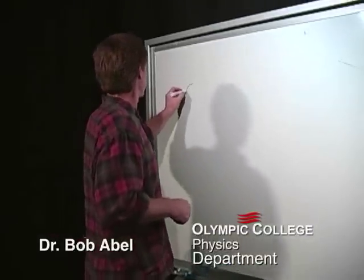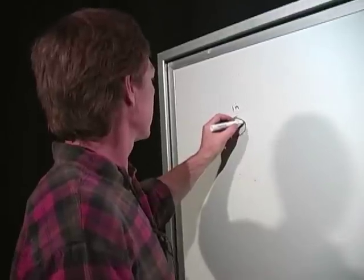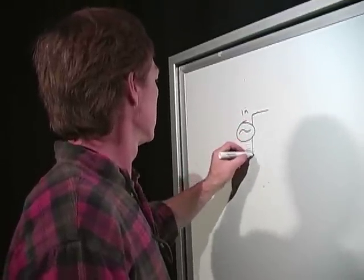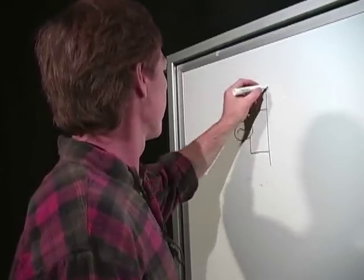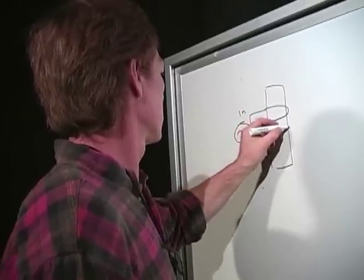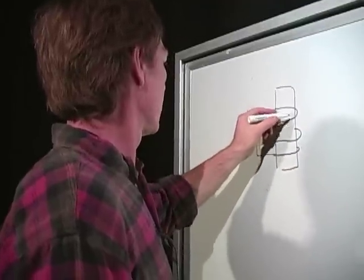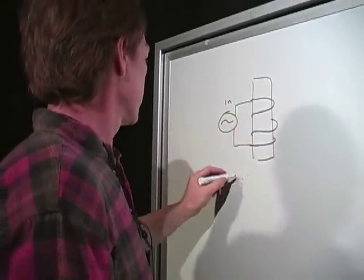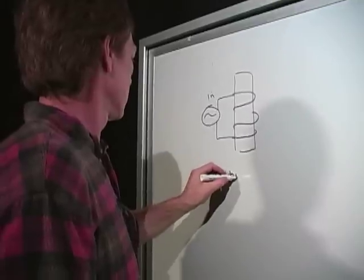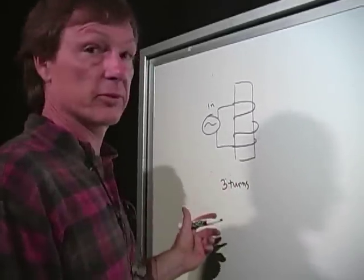So I've got this alternating current, so that's my inside. And it's attached to a bar. That's one, two, three turns. So say on the input side, I've got three turns.